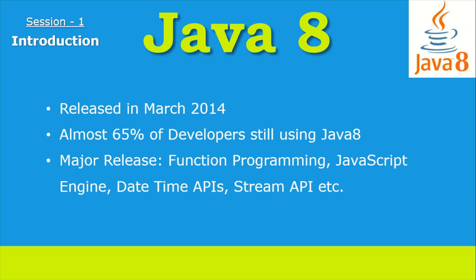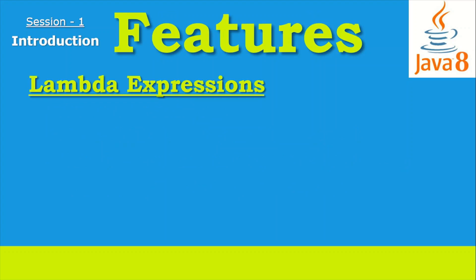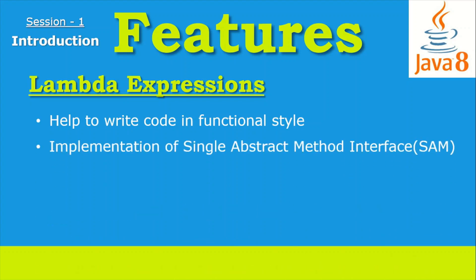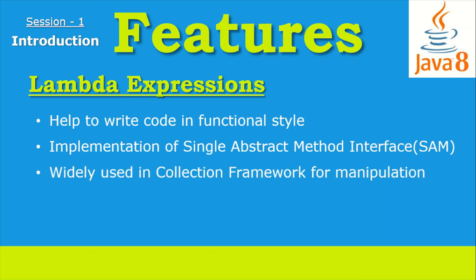The first feature is lambda expressions. Lambda expressions help us write our code in a functional style. They provide a clear, concise way to implement a single abstract method interface — an interface where there is at most one abstract method available, not more than one. Lambda expressions are widely used in the collection framework for the manipulation of lists.